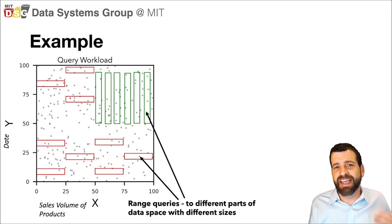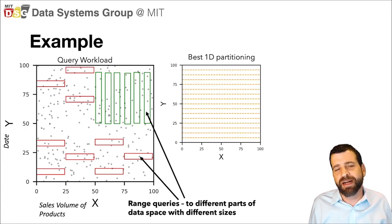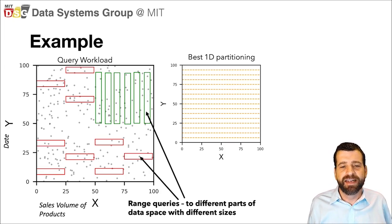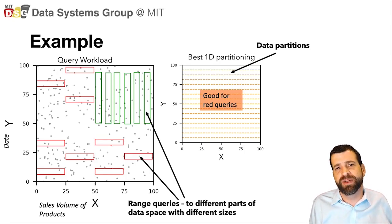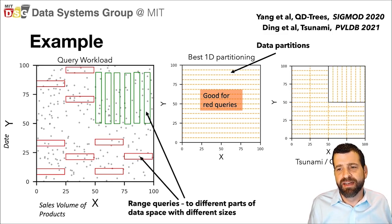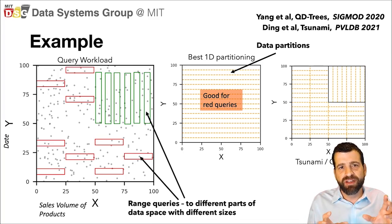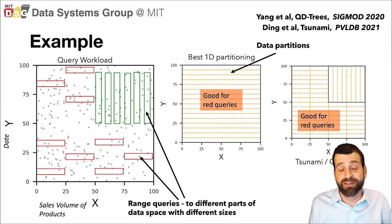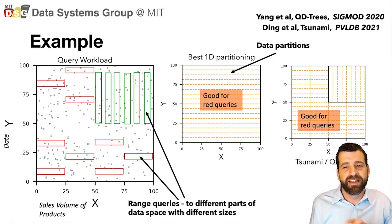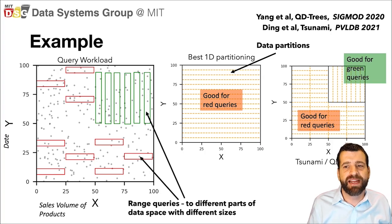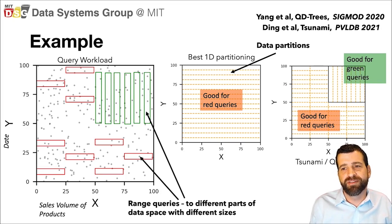The red queries look across a few dates and many products, and the green queries look across many dates but few products — these are range queries to different parts of this space. If you were to think about how to partition the data, the best one-dimensional partitioning might be to slice the data into narrow bands where each band encompasses just a few dates. That kind of layout would be pretty good for the red queries, but pretty bad for the green queries. What we'd like is a layout that uses different partitionings for different parts of the data space. There's been several recent papers that have looked at this — our own work on a system called Tsunami, as well as work on something called QD trees from Microsoft.